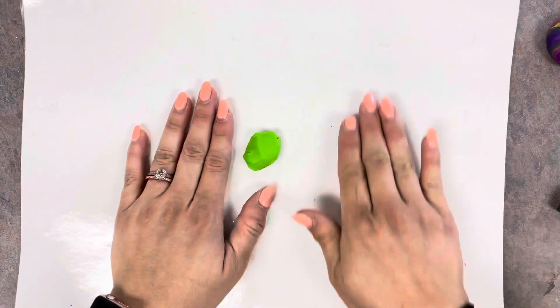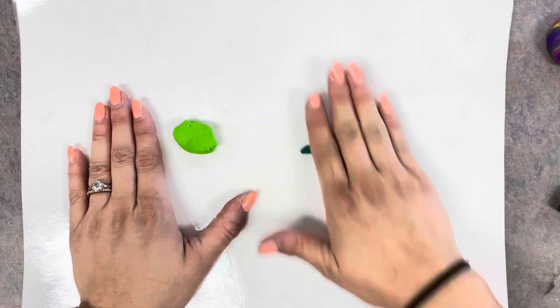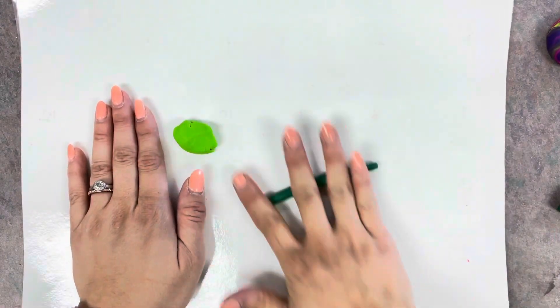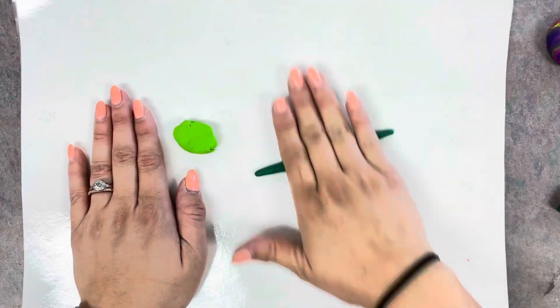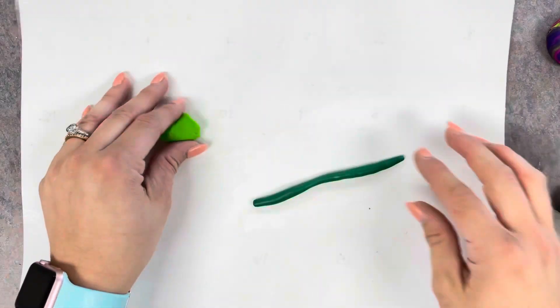Once you have both pieces soft, you're going to roll them into coils. Just back and forth on the paper—long, skinny coils—and you're going to do one with each color.